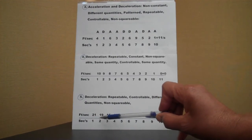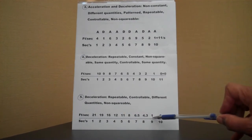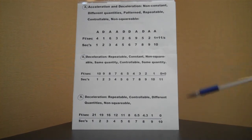Then nineteen feet, you're slowing down, sixteen, twelve, eleven, eight, six point five, four point three, one, and then you reach zero in ten seconds. This is a fast slowdown, or a fast deceleration.